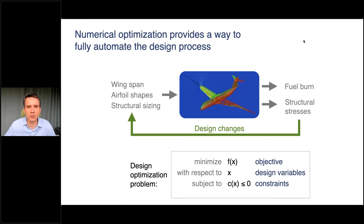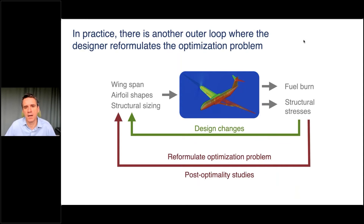Numerical optimization automates design changes based on a formal optimization problem: minimize an objective function with respect to design variables subject to constraints. It can find not just a better result, but a provably best design. In practice, it's not a push-button solution — you do a series of optimization problems, reformulate, and perform post-optimality studies, because you need to explain the trade-offs and physics of the optimum to convince specialists.